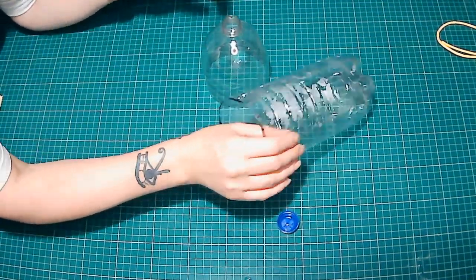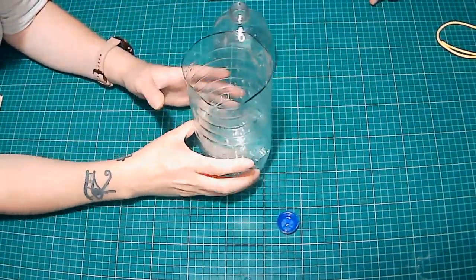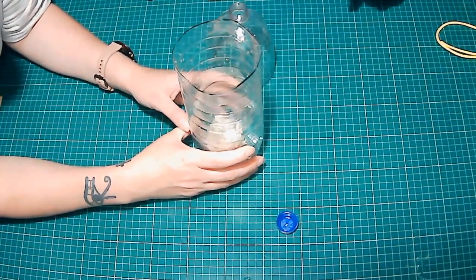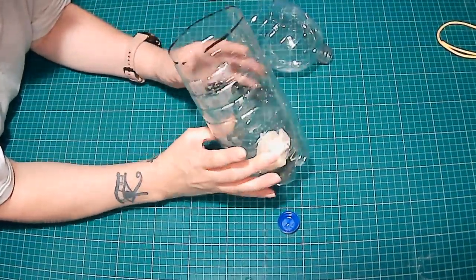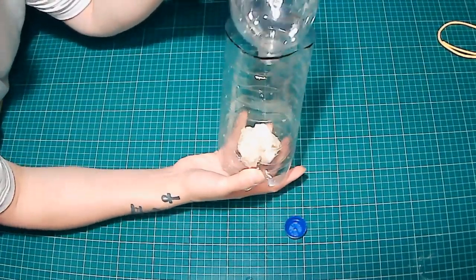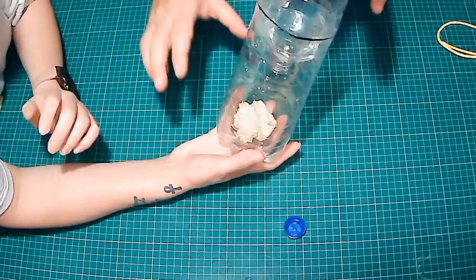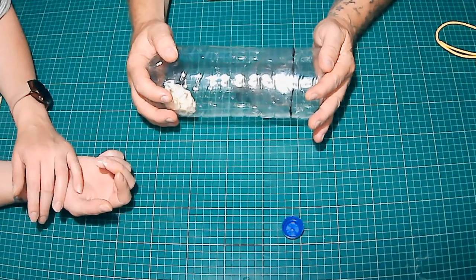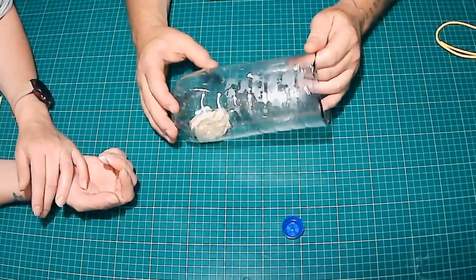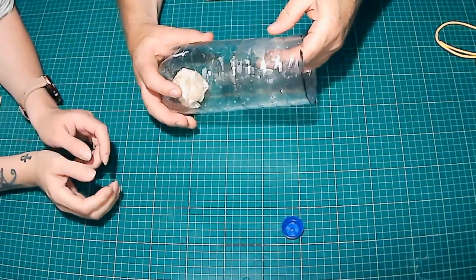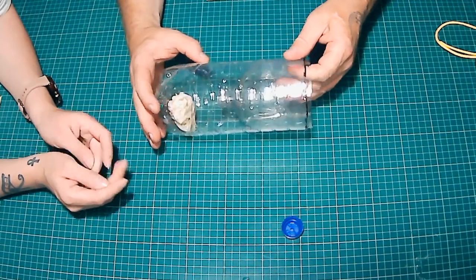So we've got the bottom of our bottle. Can I have the chicken please, or the chicken substitute in this case? We've got the fake chicken in there. Now put the top piece, turn it upside down and push it down. Is that on properly? There's a bit of... pull it up just a bit.